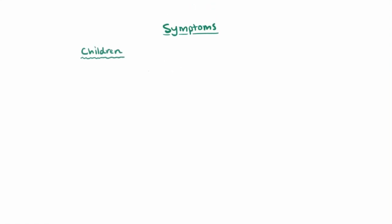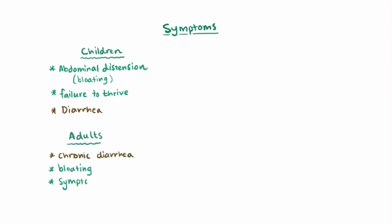So children with celiac disease often present with symptoms like abdominal distension or bloating, as well as this failure to thrive and diarrhea. Adults typically have chronic diarrhea and bloating as well, but the symptoms vary wildly.